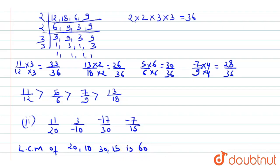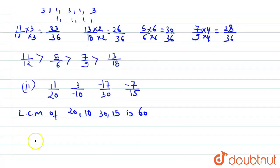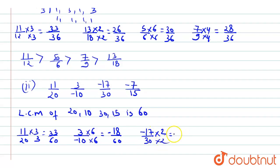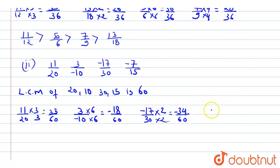The LCM of 20, 10, 30, and 15 is 60. Converting: -11/20 × 3 = -33/60; -3/10 × 6 = -18/60; -17/30 × 2 = -34/60; and -7/15 × 4 = -28/60.